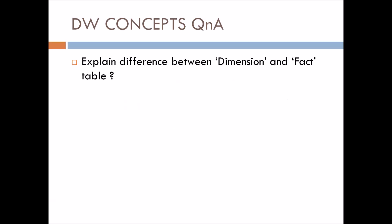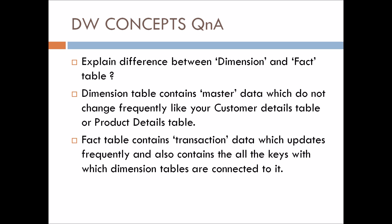The first question: explain the difference between a dimension table and a fact table. The dimension table contains master data which does not change frequently — for example, a customer details table or a product details table. Data that is master data and does not frequently change is dimension data.